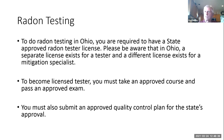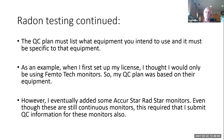Ohio and about five or six other states are pretty particular about the QC plan — we give them a plan and we have to stick to it. They are pretty diligent about making sure that we follow the rules. The QC plan must list what type of equipment you intend to use and it must be specific to that equipment. For example, when I first set up my license, I thought I was only going to be using Femto Tech monitors, so my QC plan was based on their equipment. At a national conference, I met people from Radstar and started using the Accustar Radstar monitors as well.